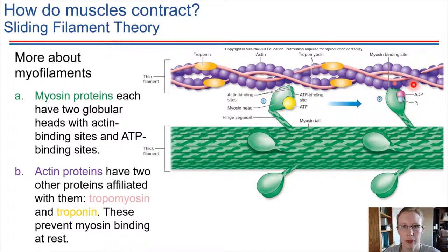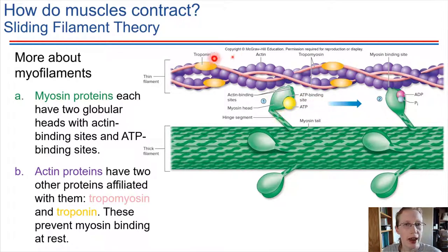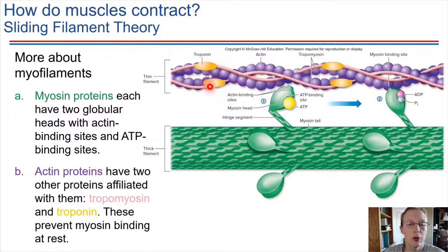Actin is shown in purple in the schematic — that's the thin filament in purple, and the thick filament is in green. There has to be a way for these two fibers to connect to each other, through the action of the myosin heads. Ordinarily, on actin when a muscle is at rest, there are some proteins — troponin and tropomyosin — and those proteins block the binding site of myosin.